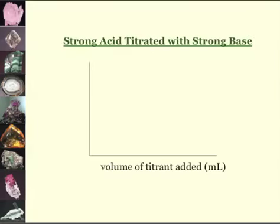A strong acid titrated with a strong base will create this sort of curve. Where when the pH is 7, that's my equivalence point. If I drop a line down, that'll tell me the amount of volume.